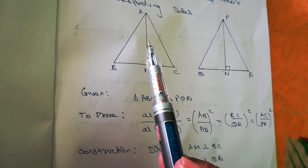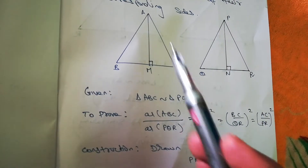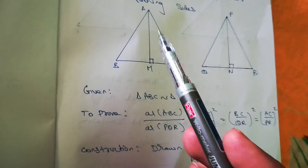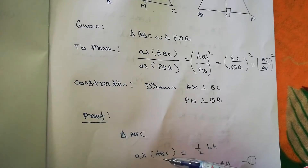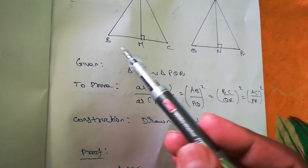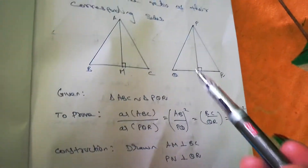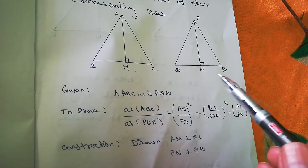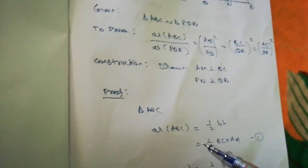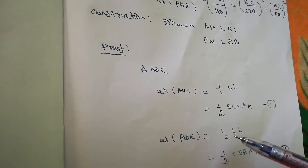Taking triangle ABC, the area formula is half base into height. So area of triangle ABC equals half into BC into AM. For the second triangle PQR, base is QR and height is PN, so area of triangle PQR equals half into QR into PN.